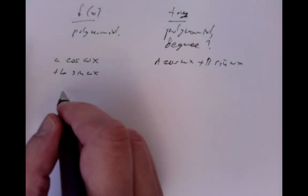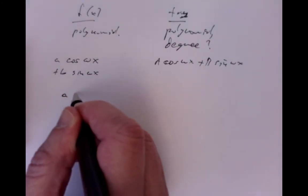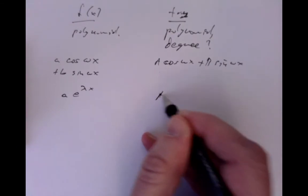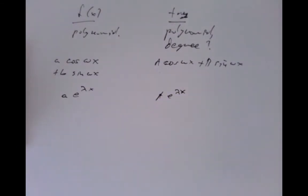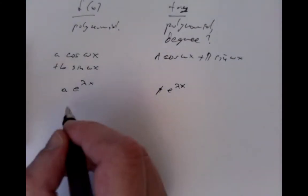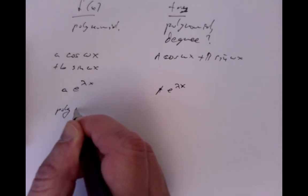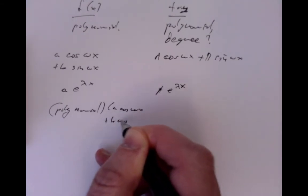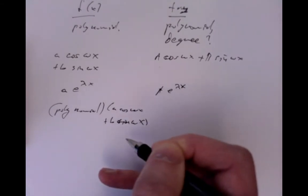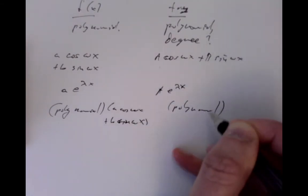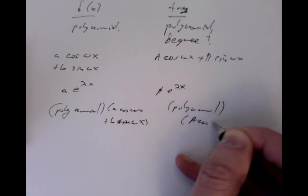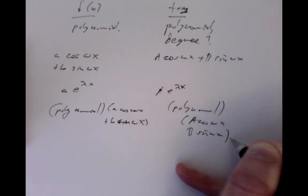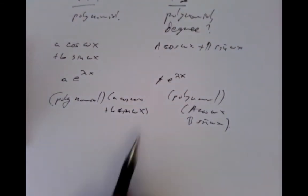Similarly, if we have something like a constant multiple of an exponential of some rate of growth, we might try a constant multiple of an exponential of the same rate of growth. And if we had something like a polynomial times a cosine or sine of a particular frequency, we might try a polynomial of about the same degree times a cosine and sine of the same frequency. Those are the sorts of tricks we could use — if we have an exponential we'd put an exponential with probably the same rate of growth.